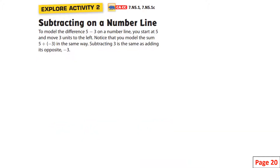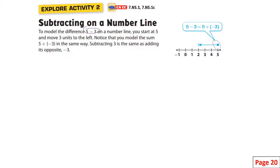Now we're going to transfer this to subtracting on a number line. For example, five minus three — you start at five and move three units to the left. You start at five here and move three units to the left, and this is the stopping point. So five minus three is two.